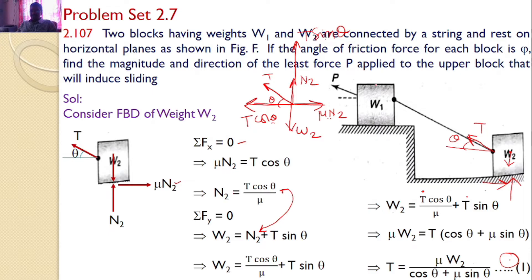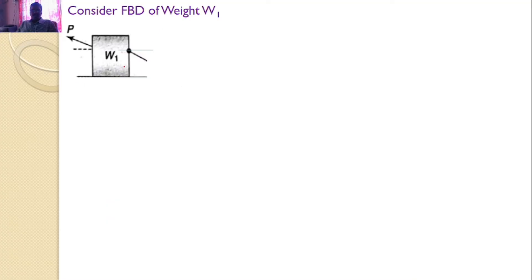Now let us consider the free body diagram of W1. The forces are: self-weight W1, normal reaction N1, string force T making angle theta, applied force P making angle alpha, and a frictional force acting towards the right side.